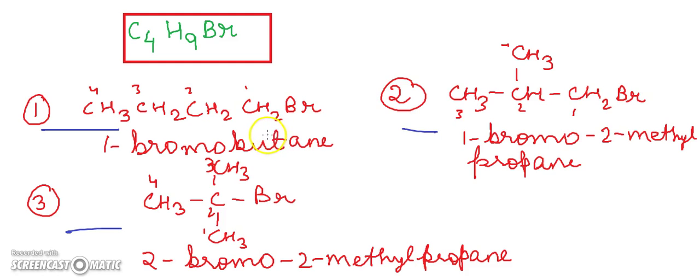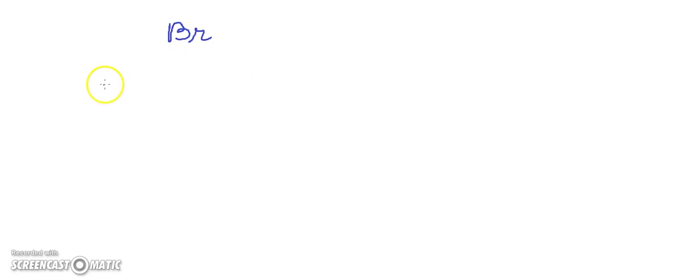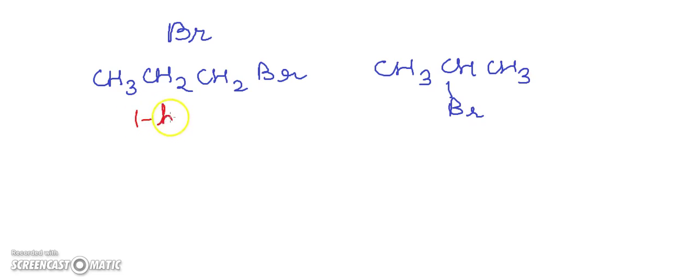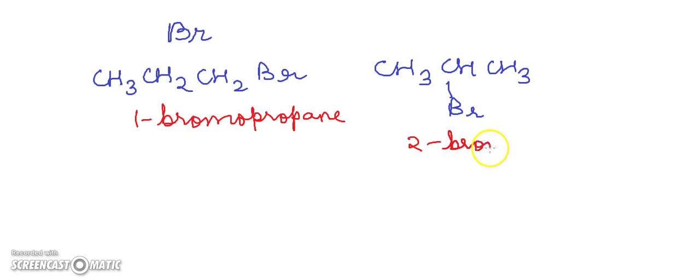Now we will look at position isomerism in haloalkanes. In position isomerism, there is a difference in the position of the halogen atom — the same bromine atom is attached to different carbon atoms. For example: CH3–CH2–CH2Br (1-bromopropane) and CH3–CHBr–CH3 (2-bromopropane).